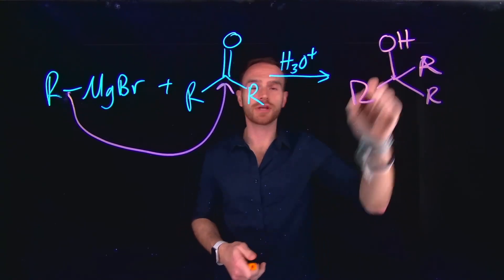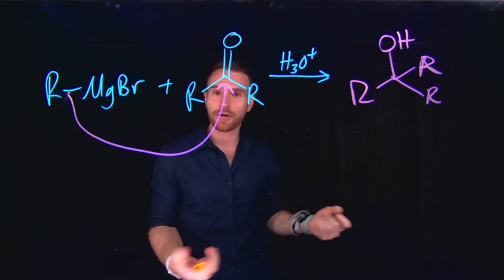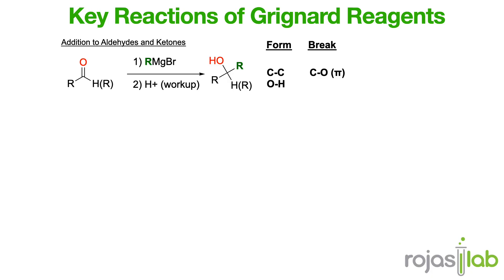And after acidic workup, you end up with a new tertiary alcohol. Upon adding Grignard reagents to aldehydes following acid workup, the carbon backbone is added and an alcohol remains.